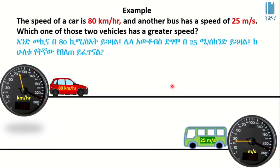The speed of a car is 80 km per hour, and another bus has a speed of 25 meters per second. Which one of those two vehicles has a greater speed? Let's see. The bus has 25 meters per second, so we need to compare these values.